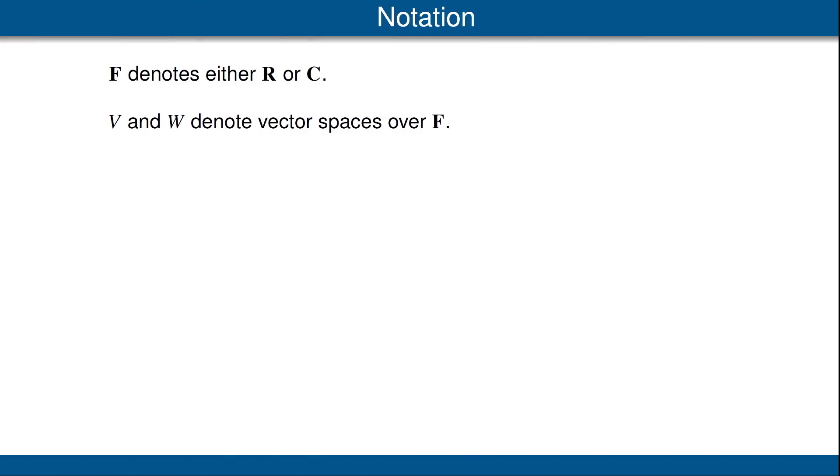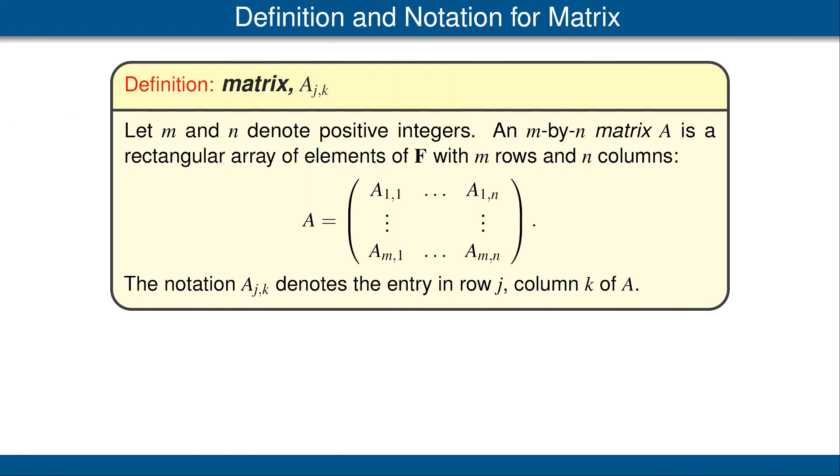Let's begin with a quick review of our notation. F denotes either the scalar field R of real numbers or the scalar field C of complex numbers. We also let V and W denote vector spaces over F. As we will see, matrices provide a very efficient method of recording information about linear maps. Before we get to that, we need to define matrices.